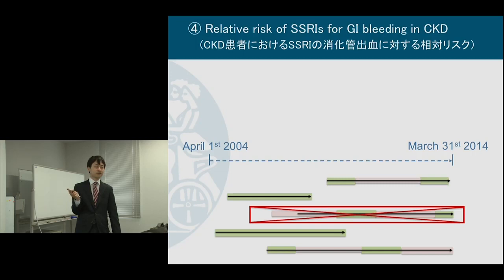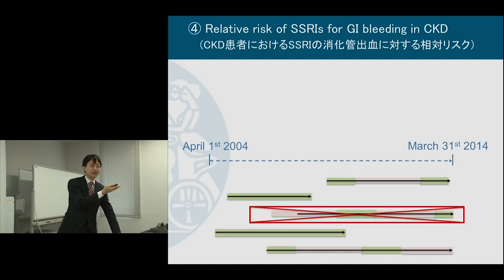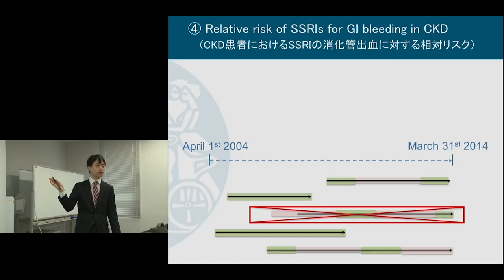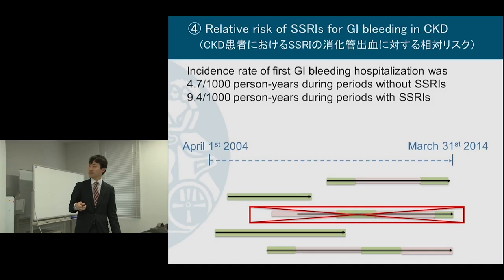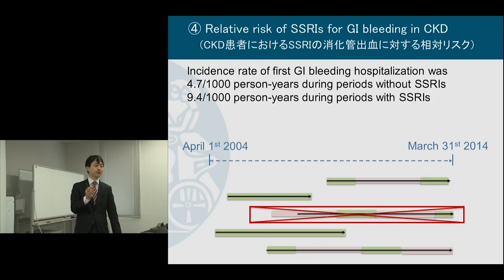I still had the option to use a case-crossover design, because the case-crossover design does not require that same condition — as Ian will explain later. But I didn't use it this time. Also, I needed to estimate the absolute incidence rate, and in a self-controlled case series or case-only design, the absolute incidence rate cannot be estimated because you only include patients who experienced the outcome.